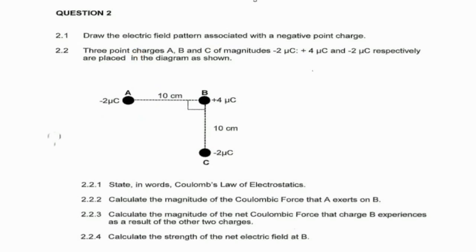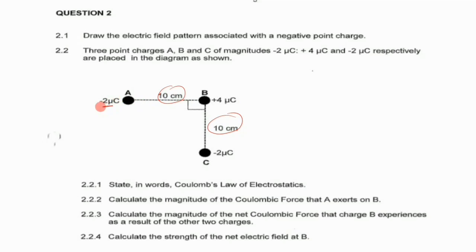Question 2.2: three point charges A, B, and C of magnitude negative two microcoulombs, four microcoulombs, and negative two microcoulombs respectively are placed as shown in the diagram. The distance between A and B is 10 cm and between B and C is 10 cm. We need to convert the centimeters to meters and the microcoulombs to coulombs.